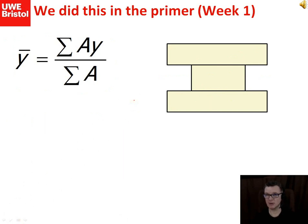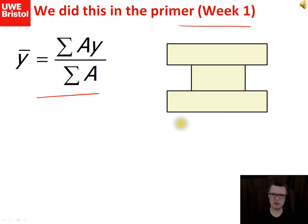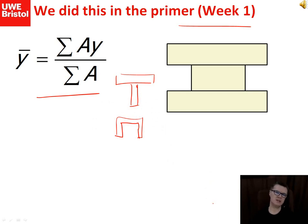You've done this before in your first week finding centroids using this equation. What we want to do is use the approach from the course notes, because it helps a lot when going on to do calculations for the second moment of area for an I-beam, a T-beam, or possibly a channel beam - which basically looks like a C. These are the kinds of beams that are fairly rectangular in shape.